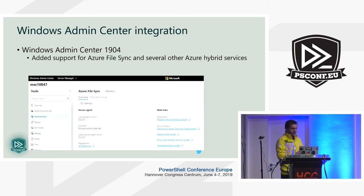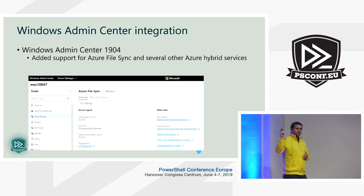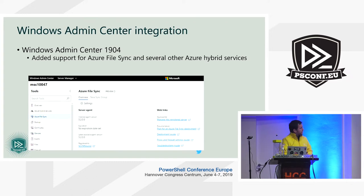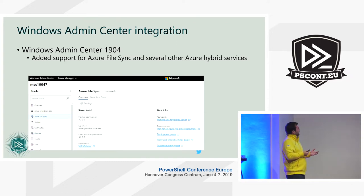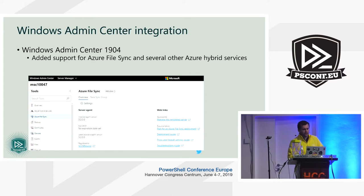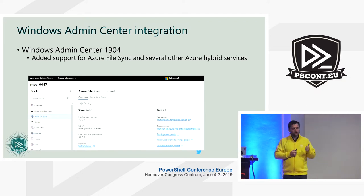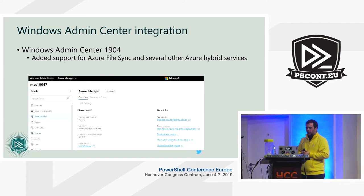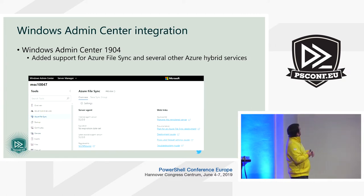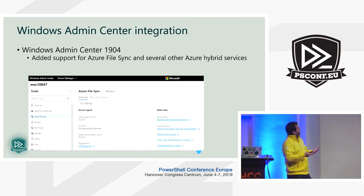I also want to mention the new Windows Admin Center integration. With the 1904 release of Windows Admin Center, they added support for many Azure services including Azure File Sync. By going into the server you want to manage, you'll find Azure File Sync in the left panel where you can see the version installed, create sync groups, deploy the agent, and so on. If you're deploying to just one or two servers, this may be the preferred approach.